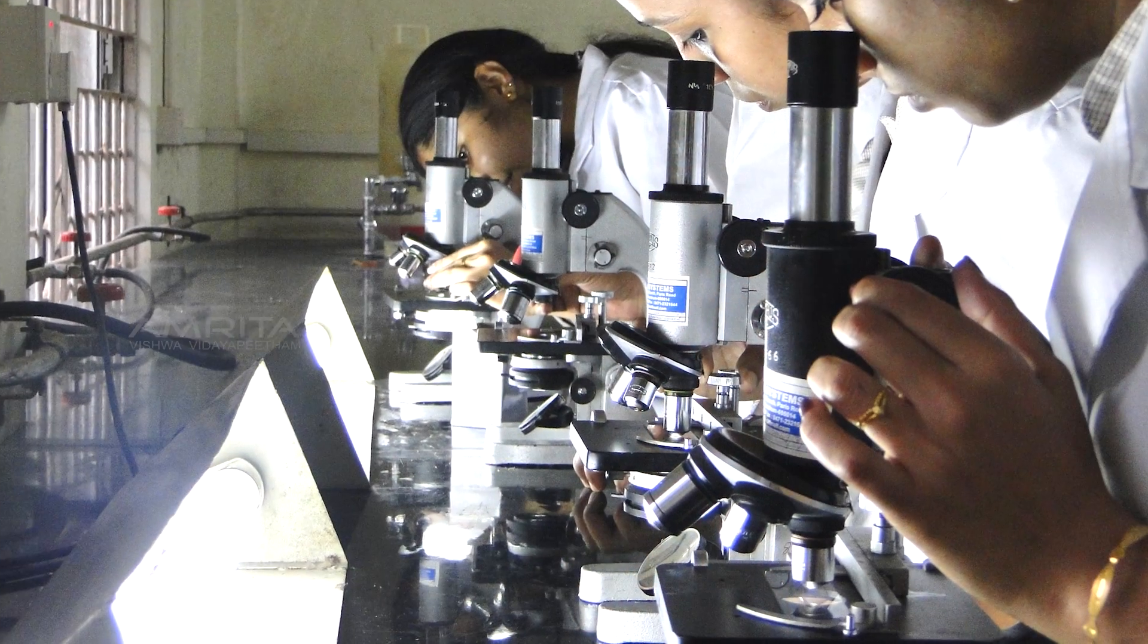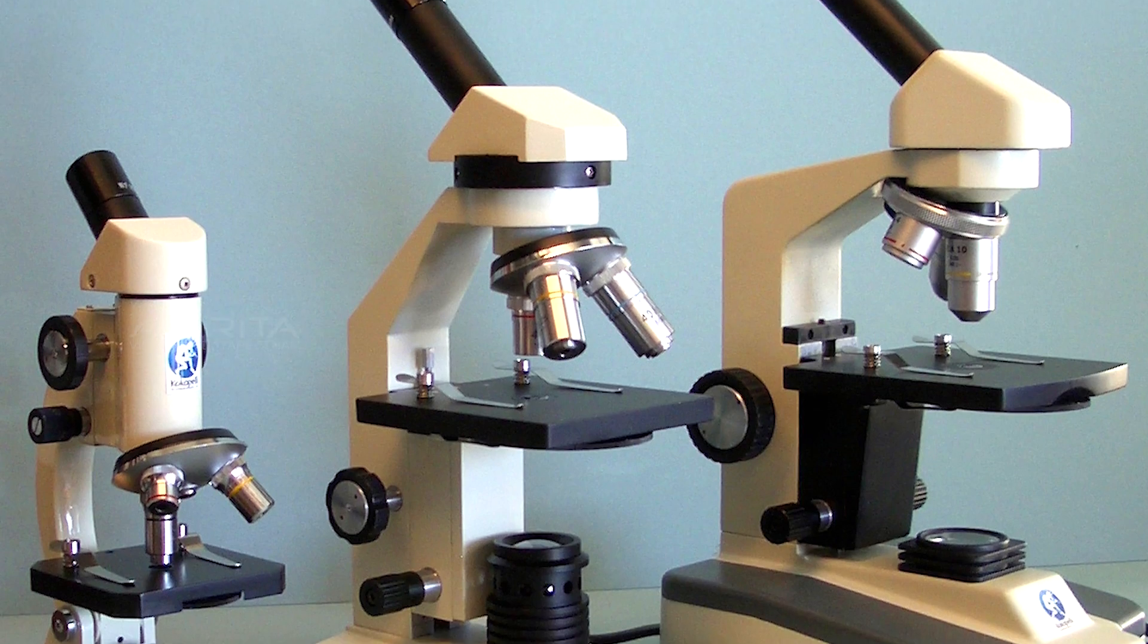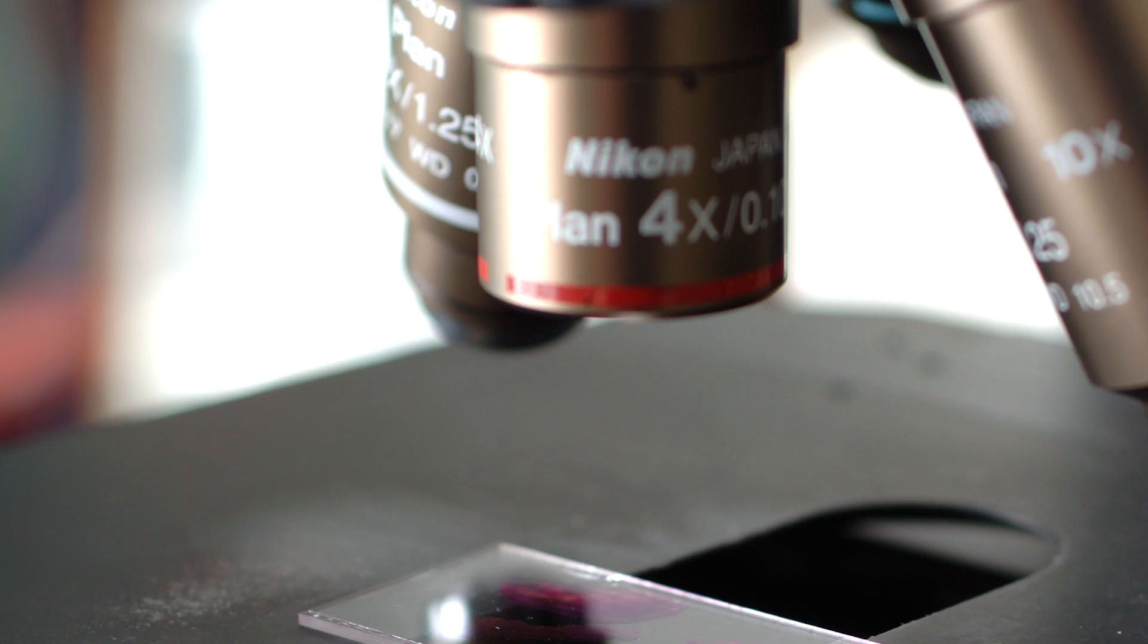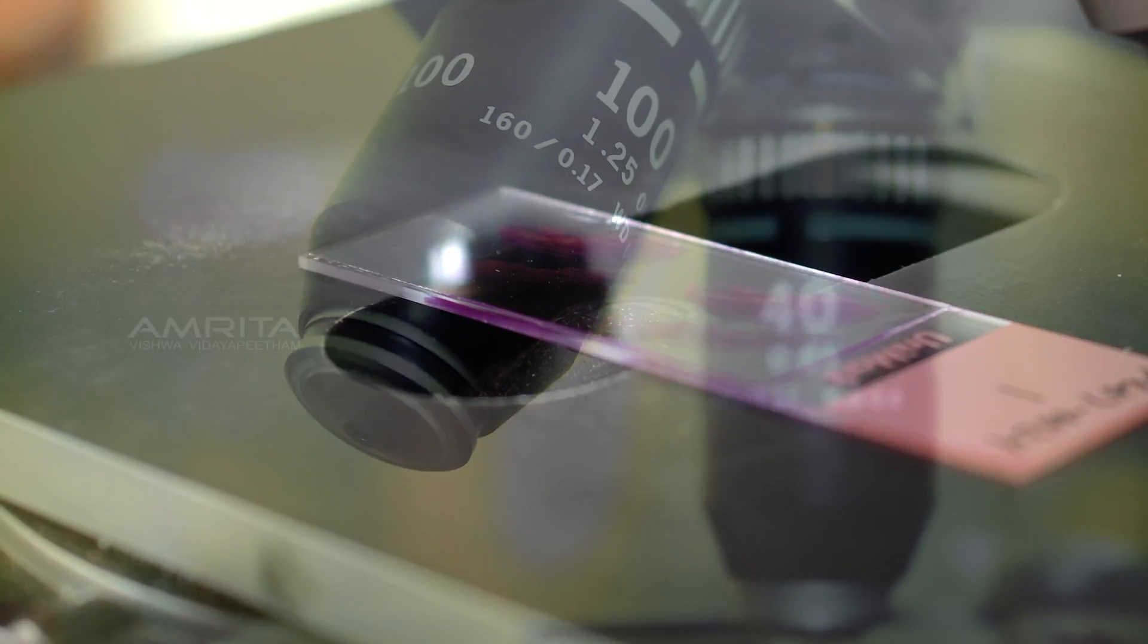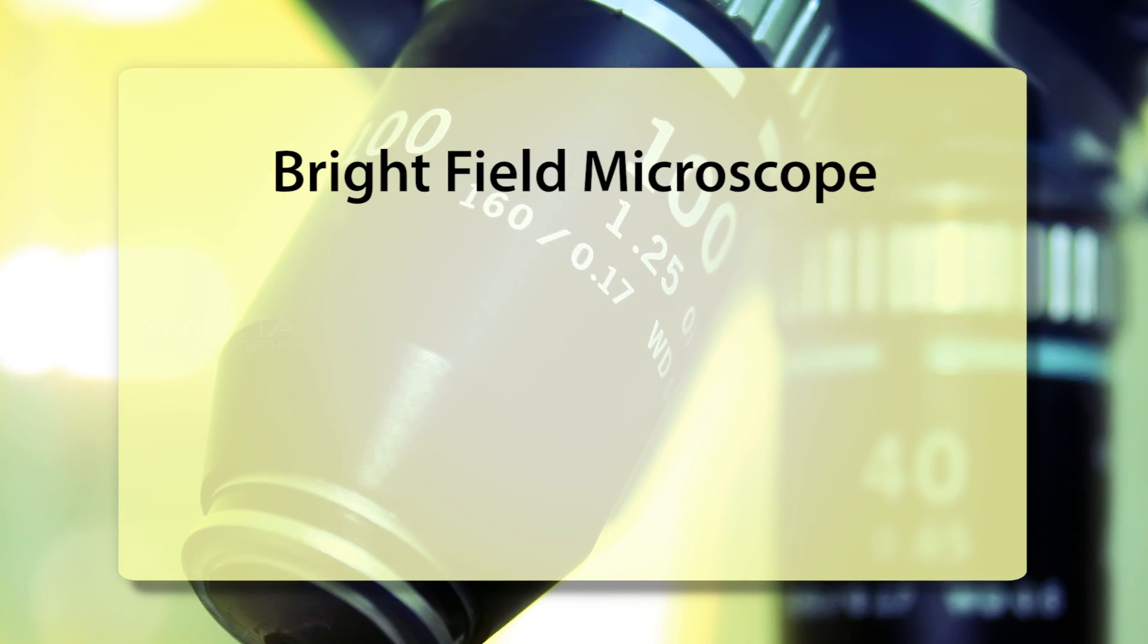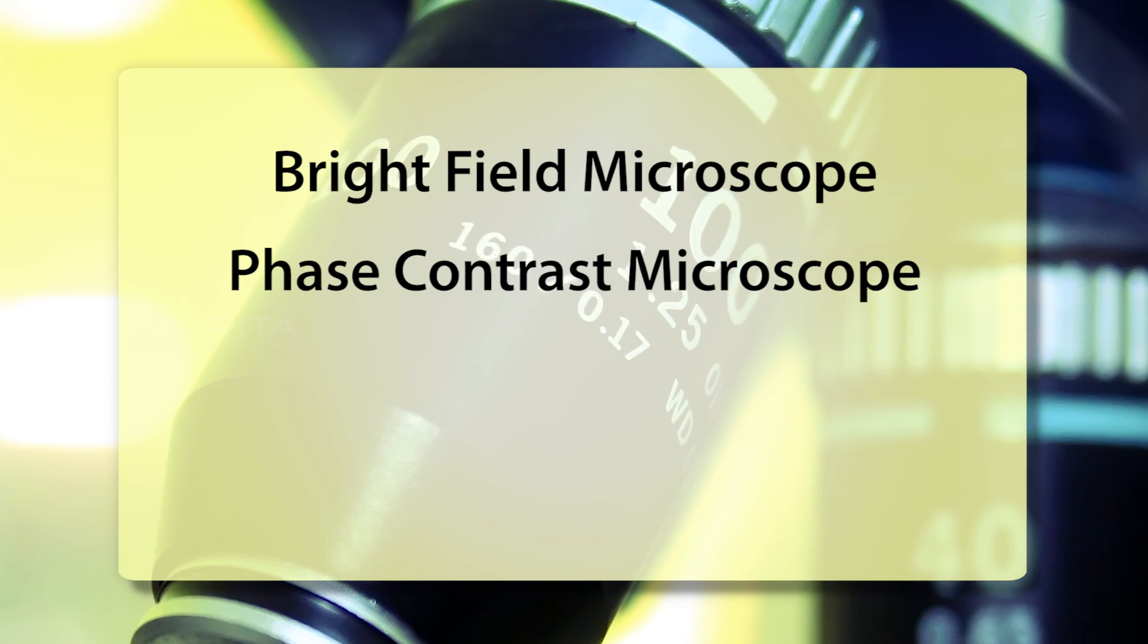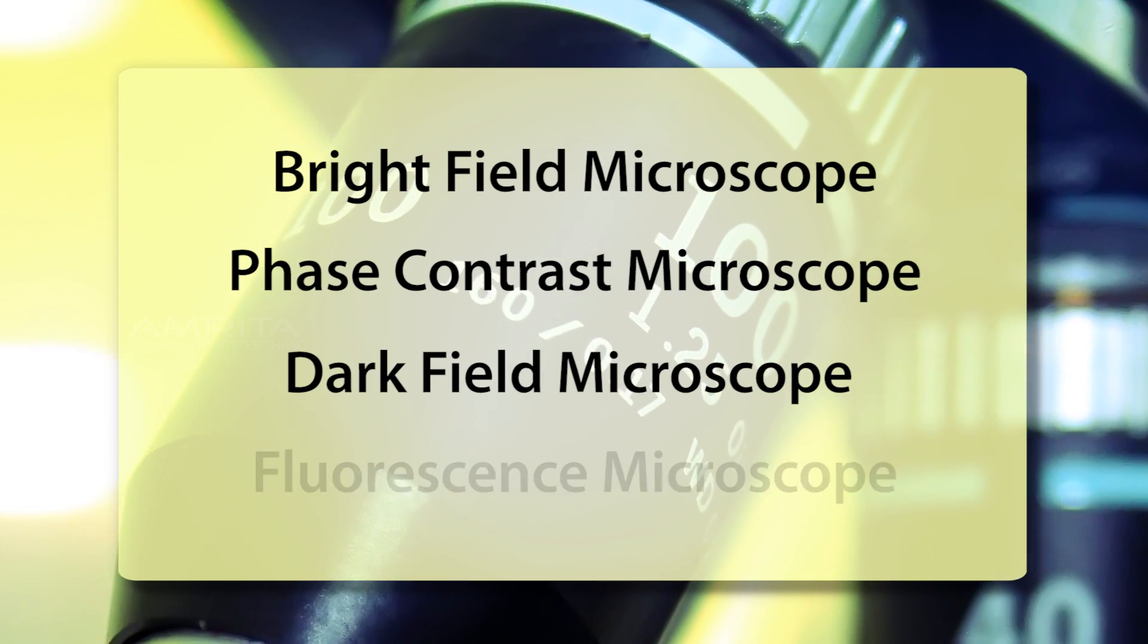The basic optical microscope system used in the laboratory is a light microscope in which visible light passes directly through the lenses and specimen. Light microscopes can be categorized into the bright field microscope, phase contrast microscope, dark field microscope and fluorescence microscope.